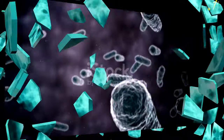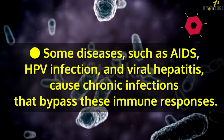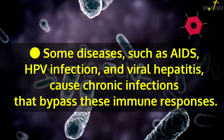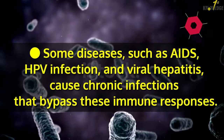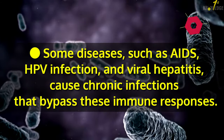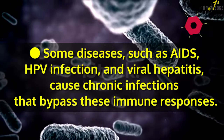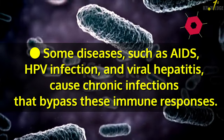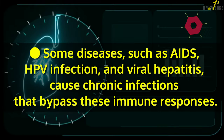Viral infections in animals trigger an immune response. Vaccines that provide artificial immunity to specific viral infections can trigger immunosuppressive responses.